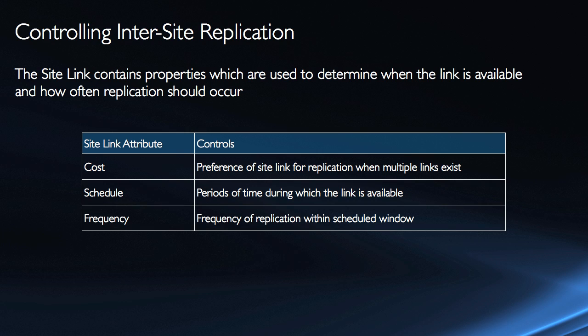The schedule and frequency are also important properties. The schedule is the window of time during which the link is available — for example, you could make the link only available during off hours. The frequency is the interval of replication within that scheduled window. When you have two sites linked together, they're only going to replicate within the scheduled window and at the defined frequency. If you have a chained approach to your sites, be very careful with scheduling so that convergence doesn't take an abnormal amount of time to get from site A to site C. Usually it's set to replicate every night with several hours available and a frequency of every hour to ensure all changes are replicated.